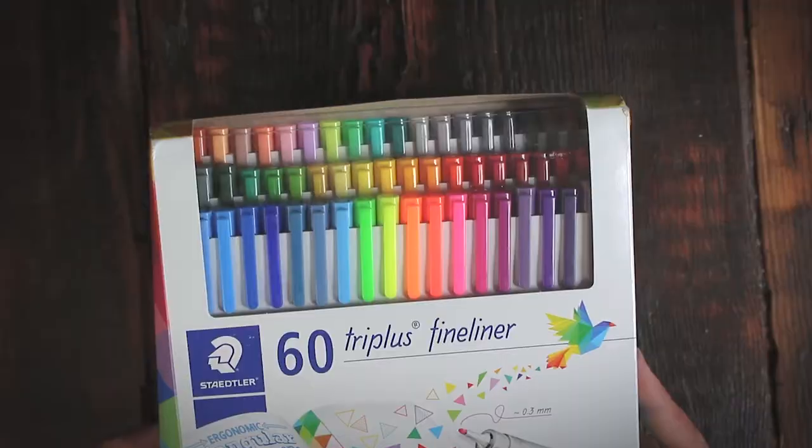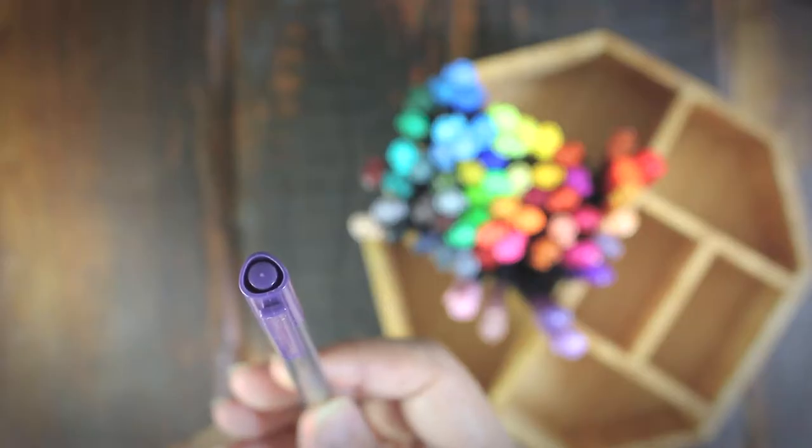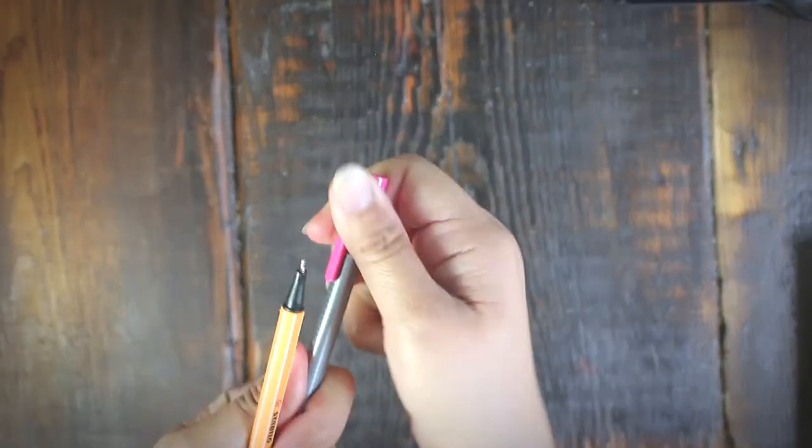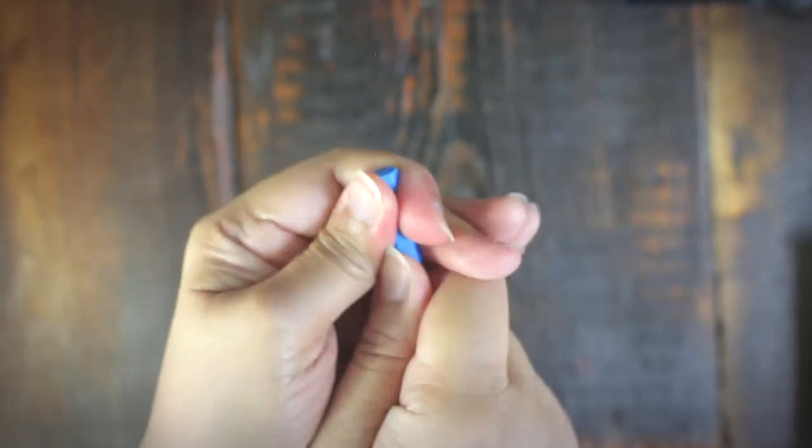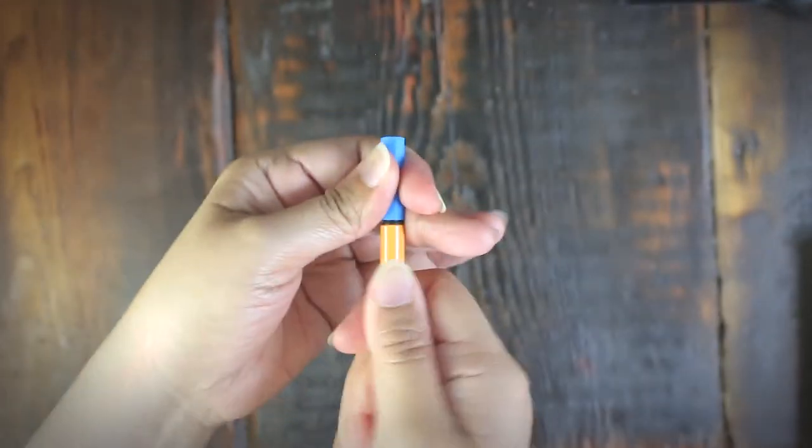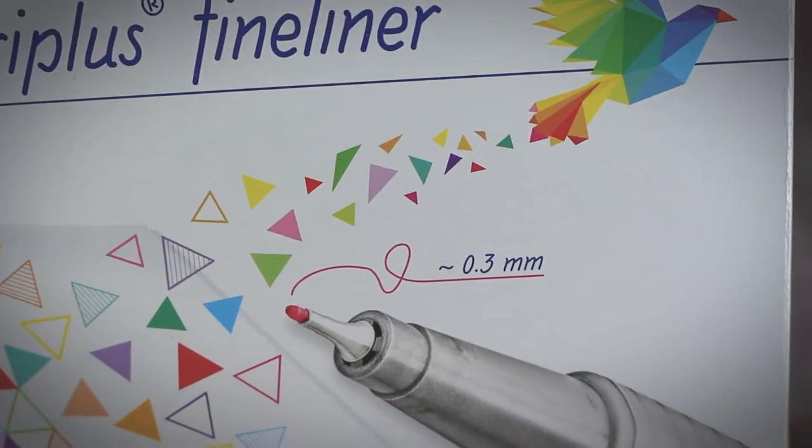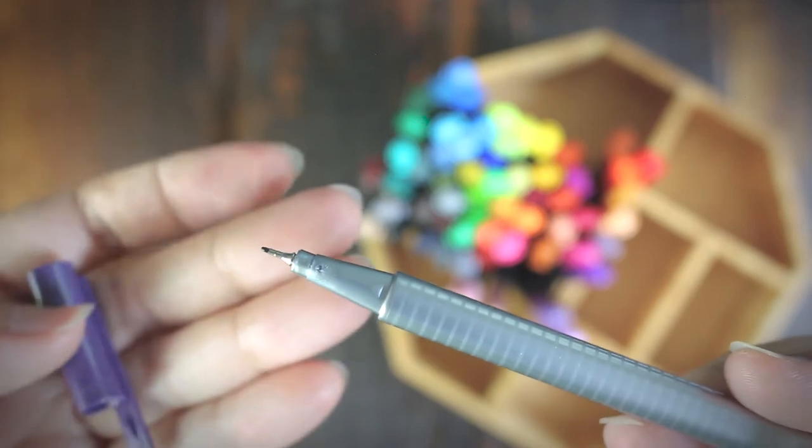Now for Staedtler, the barrel is triangular. The cap is a bit of a struggle to open when new. Actually, both pens are difficult to open. I was having a tug of war with a cap. Anyway, Staedtler Triplus pens have 0.3 millimeter tips, which are also encased in metal, so that's great.